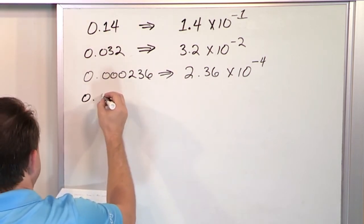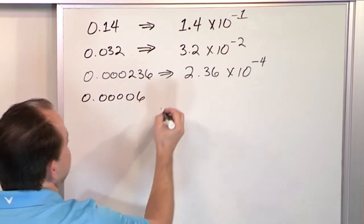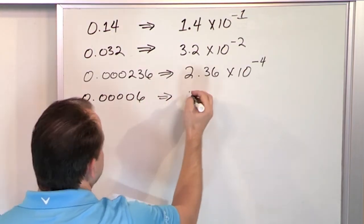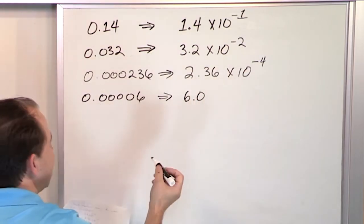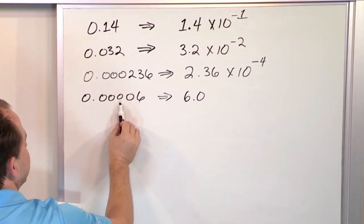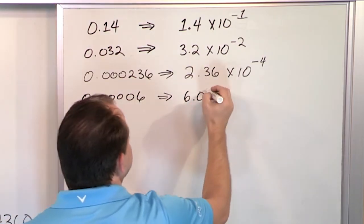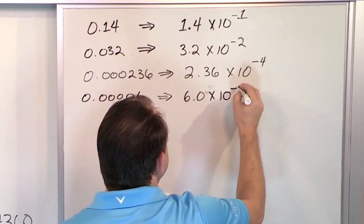And then what if I had 0.00006? Just a single digit at the end. What do I do there? I only have one non-zero digit, so I write it as 6.0. But then I'm shifting it to the left. How many times? If the decimal's here, one, two, three, four, five. So it has to be written as negative. You have to write it times 10 to the negative five.